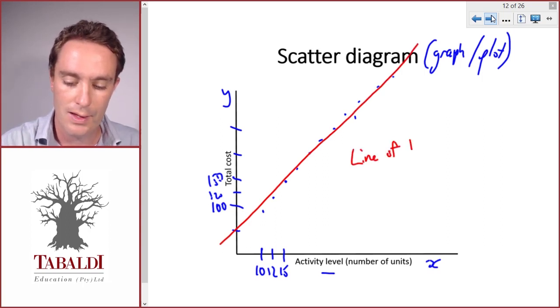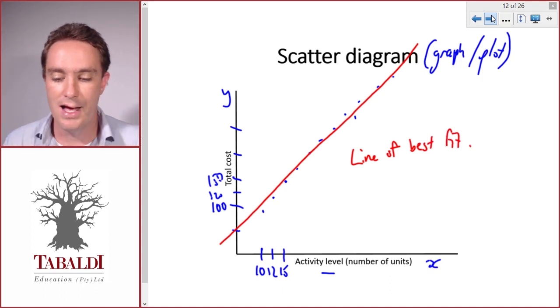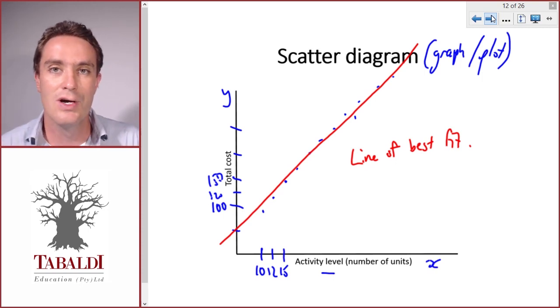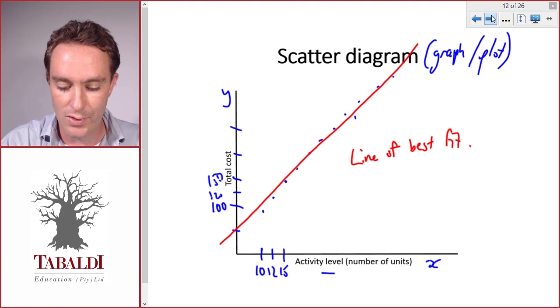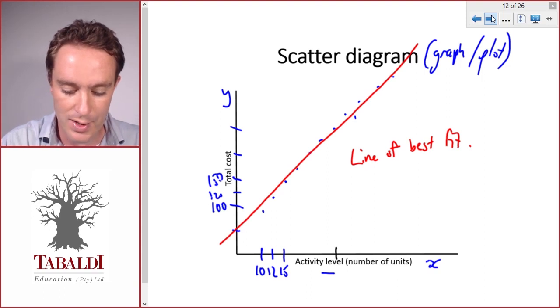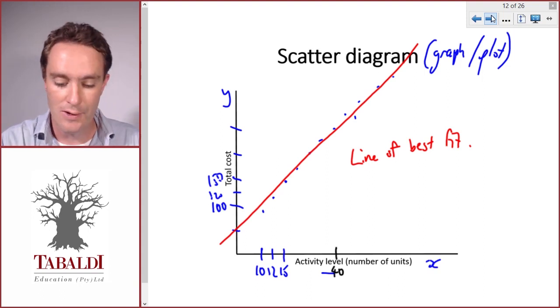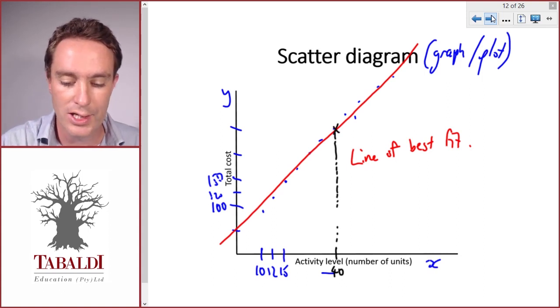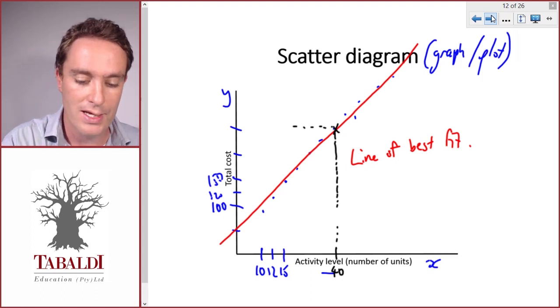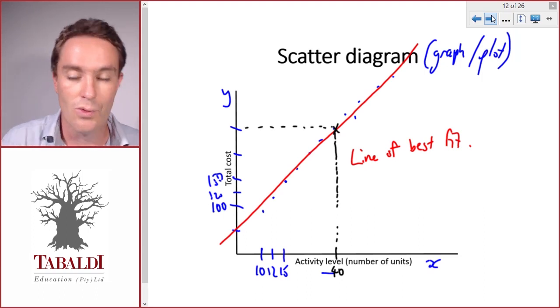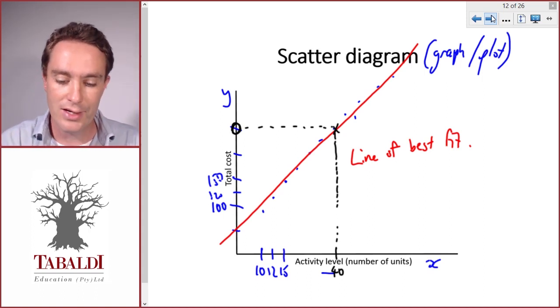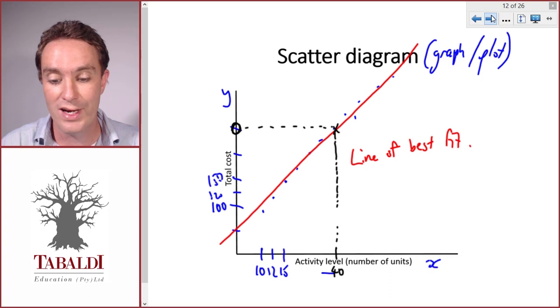So if we know in this particular month we're going to produce 40 units, we can extend it from the x-axis to our prediction line or line of best fit, and then from there extend left towards the y-axis and read off our total cost from the graph. You can see how important it is to draw very neatly and on scale, otherwise you'll get less reliable results.